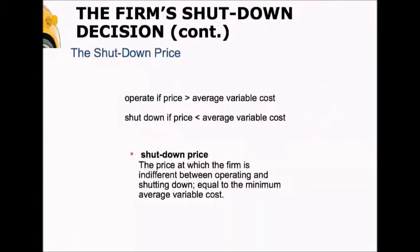This leads us to a rule of thumb: operate if the price is greater than average variable cost; shut down if the price is less than average variable cost. The shutdown price is the price at which the firm is indifferent between operating and shutting down in the short run — it's equal to the minimum of average variable cost.